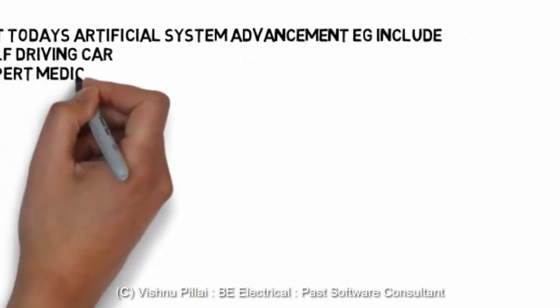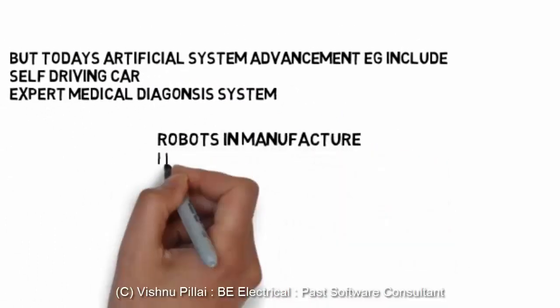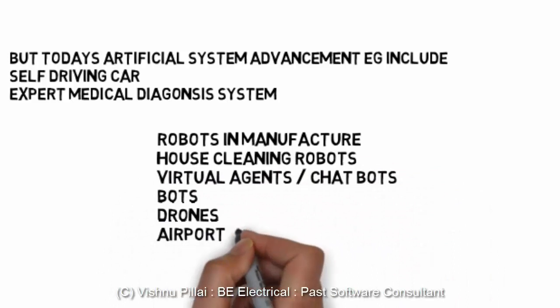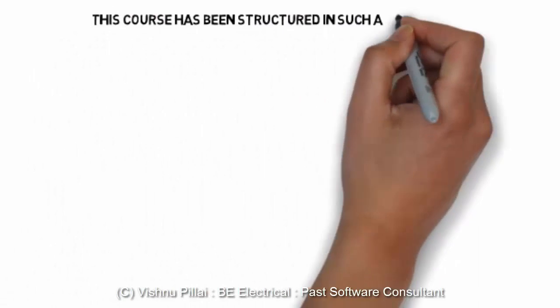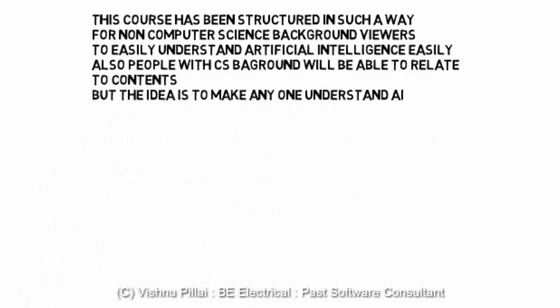Today's advanced AI systems include self-driving cars, expert medical diagnosis systems, robots involved in manufacturing, house-cleaning robots, virtual agents or chatbots, drones, and airport flight management systems. These are some examples of artificial intelligence systems you can see in real life today. AI itself is not a new field — it has been there for many years, and recently it has gained interest from a lot of people, which is one of the reasons I am preparing this course.